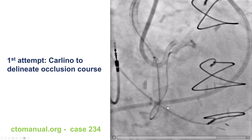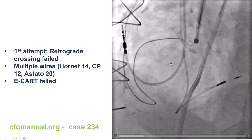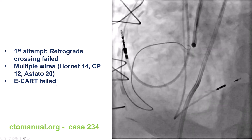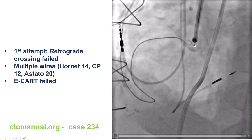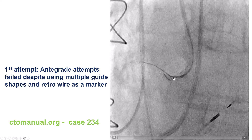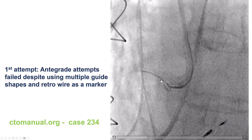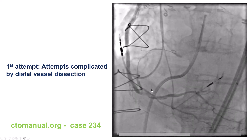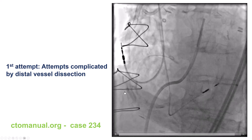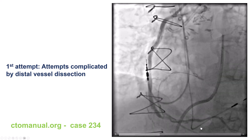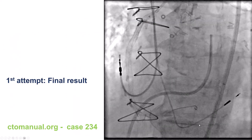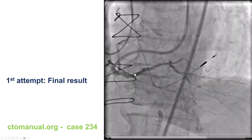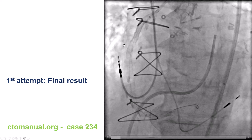We used the Carlino technique going retrograde through a microcatheter, and despite using multiple penetrating guide wires as well as CART, we were unable to puncture retrograde into the aorta. We tried to engage but could not, and after all this, we had a dissection of the anastomosis of the saphenous vein graft. We had to stent all the way from the saphenous vein graft into the native right coronary artery. The final result showed flow in the vein graft, but the CTO remained occluded.